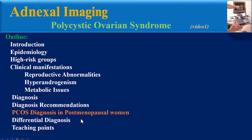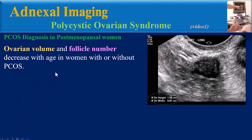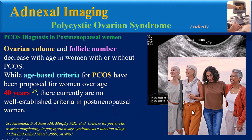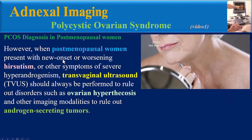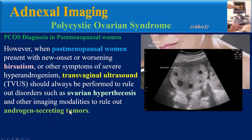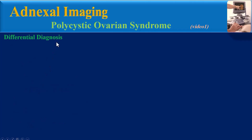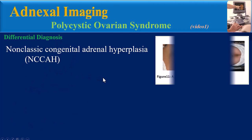PCOS diagnosis in postmenopausal women: Ovarian volume and follicle number decrease with age in women with or without PCOS. While age-based criteria have been proposed for women over age 14, there are currently no well-established criteria in postmenopausal women. However, when postmenopausal women present with new onset or worsening hirsutism or other symptoms of severe hyperandrogenism, transvaginal ultrasound should always be performed to rule out ovarian hyperthecosis, and other imaging modalities should be used to rule out androgen-secreting tumors.